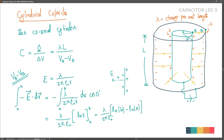Being careful about the sign: VB - VA = λ/(2πε₀) · ln(b/a). Therefore VA - VB = -λ/(2πε₀) · ln(b/a), but since b > a, ln(b/a) is positive, we get VA - VB = λ/(2πε₀) · ln(b/a) as a positive quantity (magnitude).